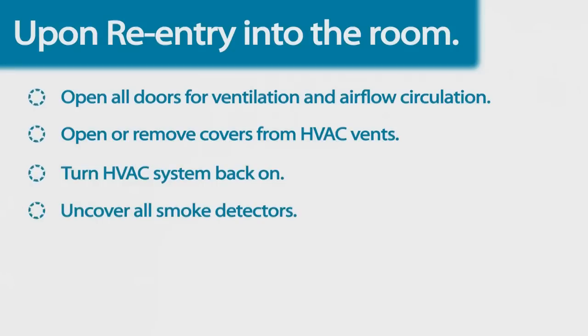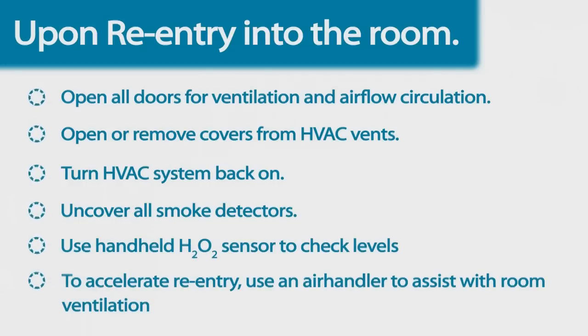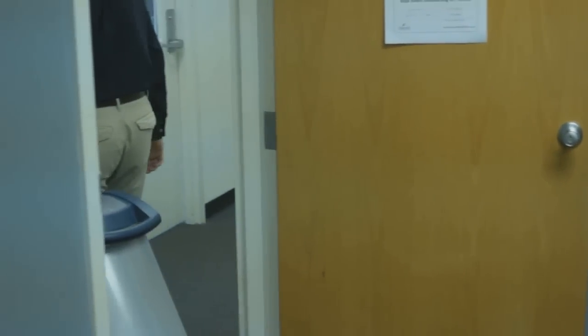Also, remove any covers from smoke detectors at this time. Sanosil also recommends the use of a handheld hydrogen peroxide sensor to check for safe levels. To accelerate re-entry into the room, you can use an air handler to assist with ventilation. When the treatment process is complete, unplug the Halo and remove the unit from the room.